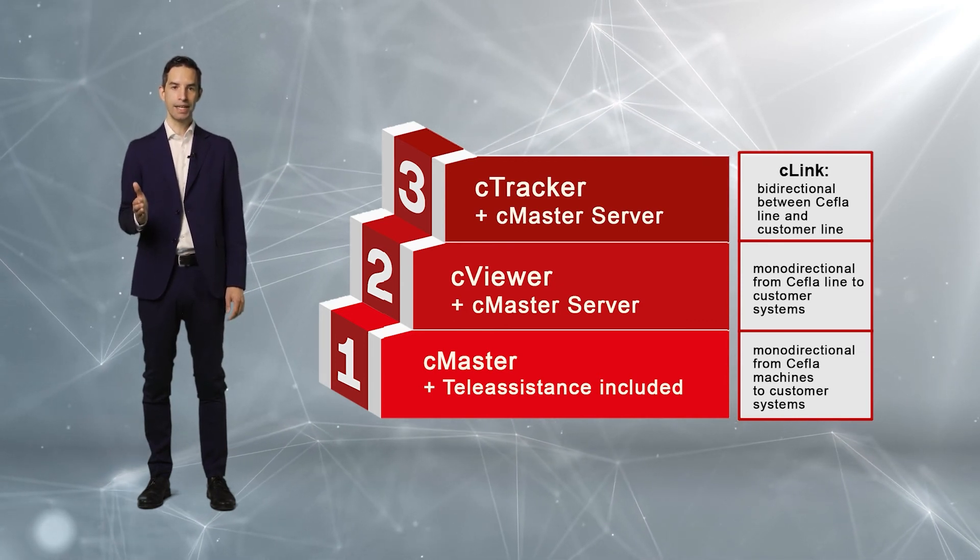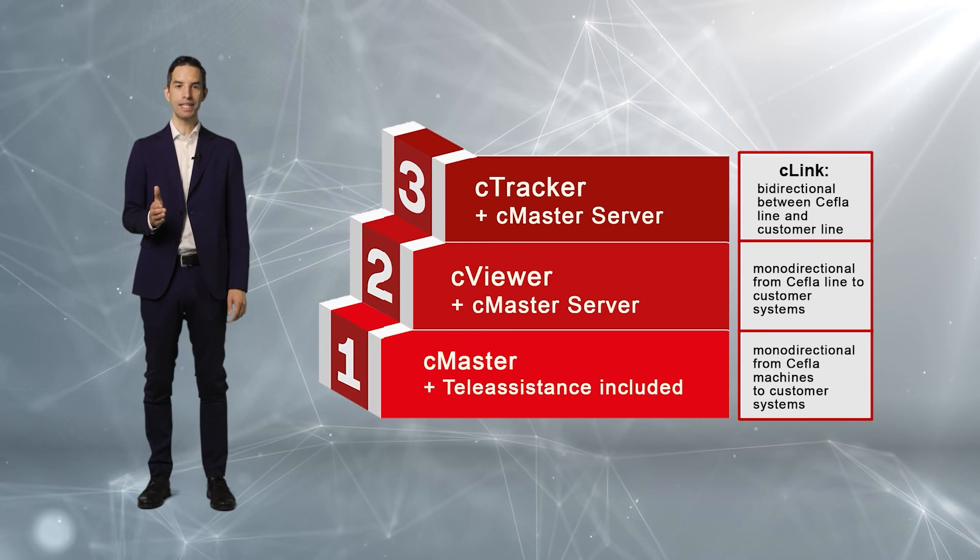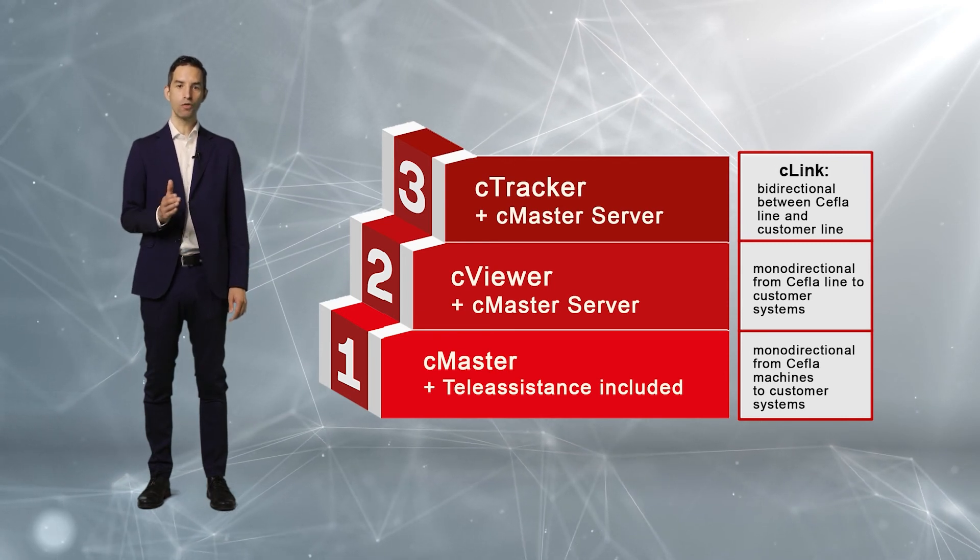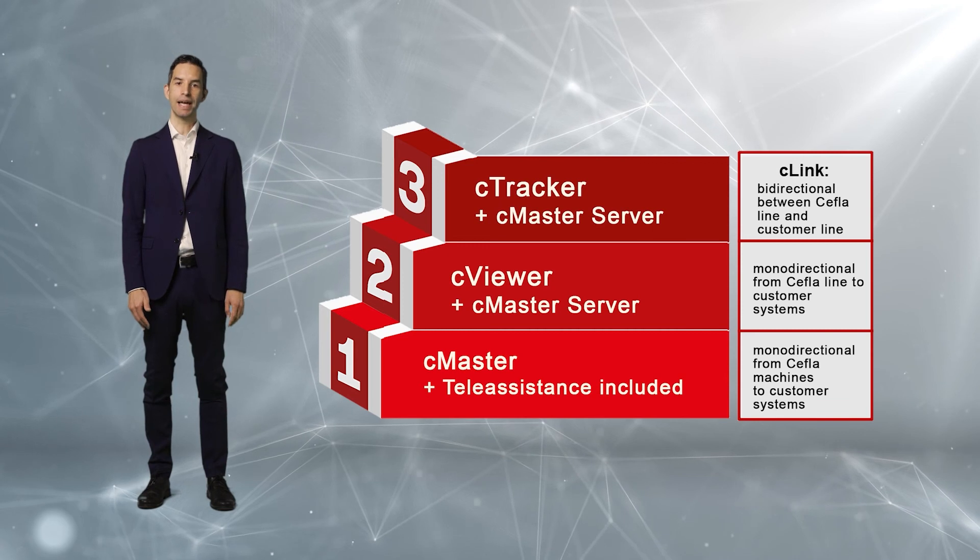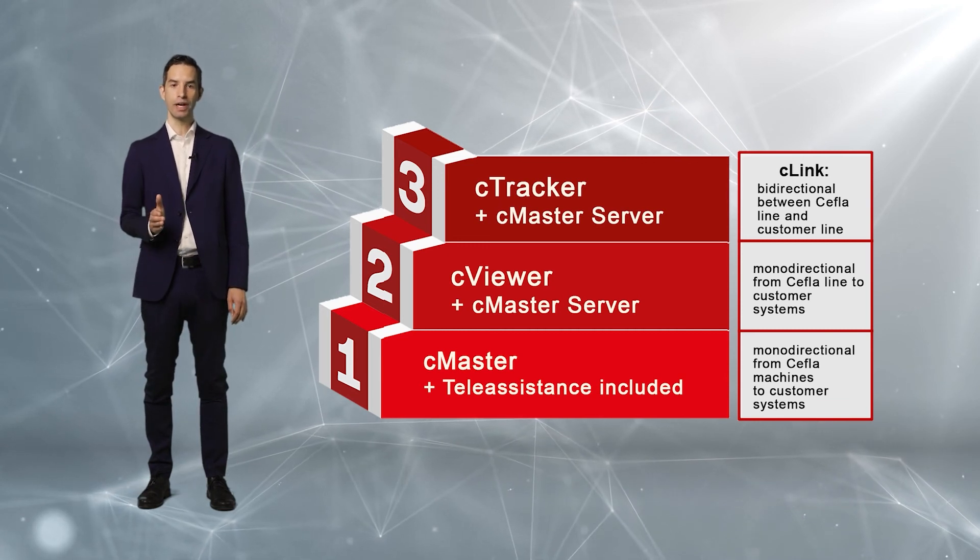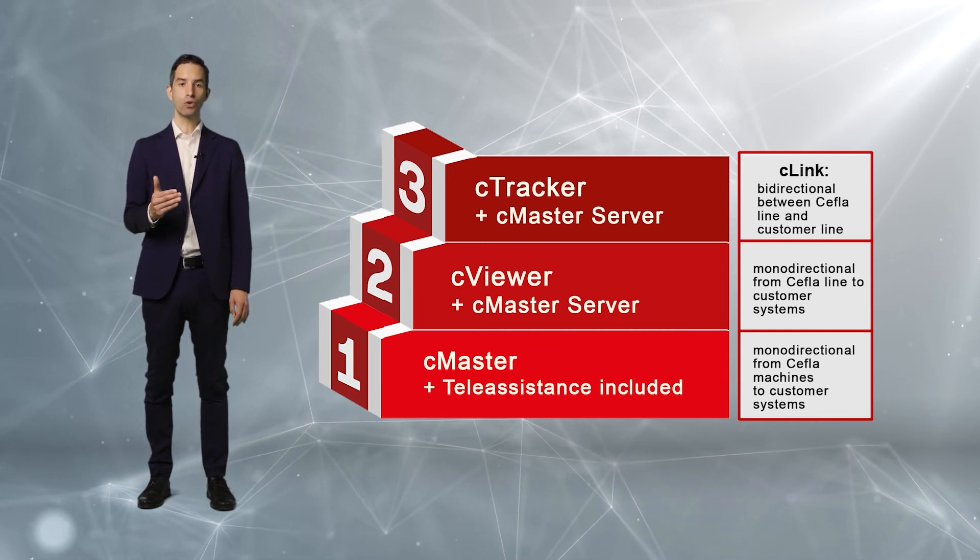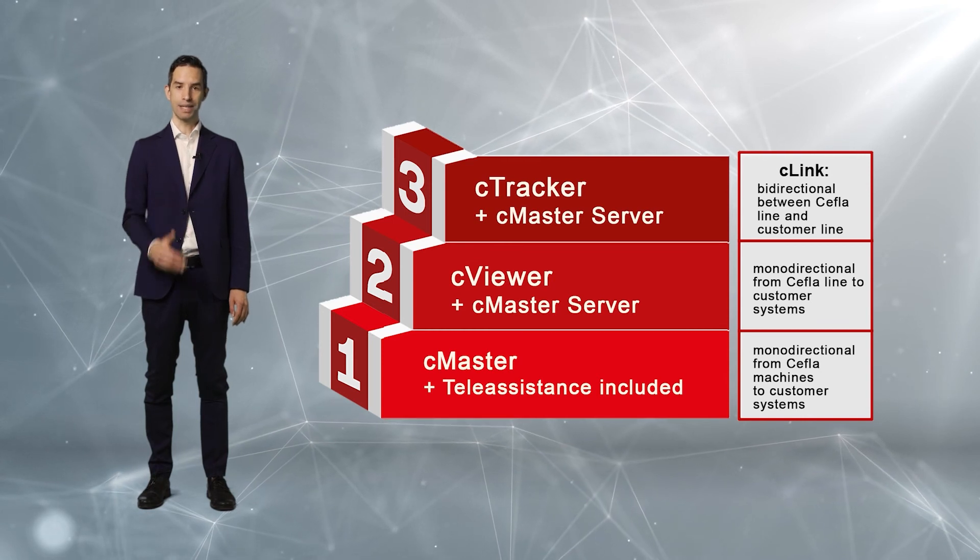Exchange of production orders with C-Tracker, from ERP to the line in bidirectional mode. Software to manage one-way communication from ERP to the line with C-Viewer, all the way to one-way machine communication with C-Master.